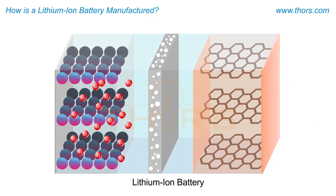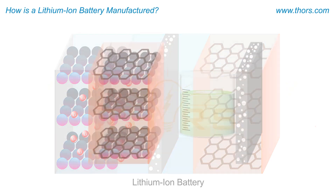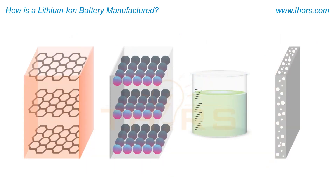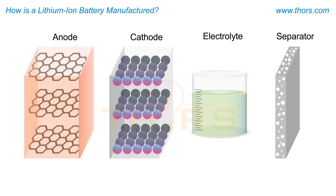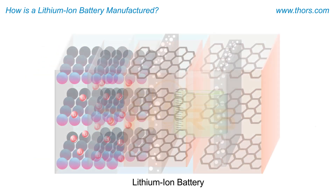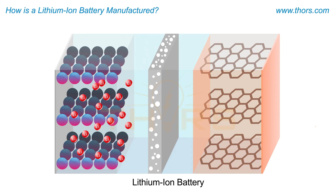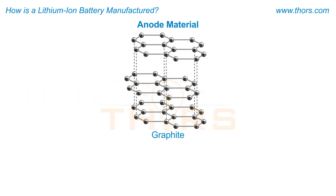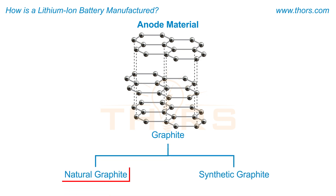Lithium-ion battery (LIB) manufacturing begins with the manufacture of major components, which include the anode, cathode, electrolyte, and separator. The individual components are then processed, assembled, and activated to form the lithium-ion battery. The major source for the anode material is graphite, which can be either extracted from ores or produced synthetically.